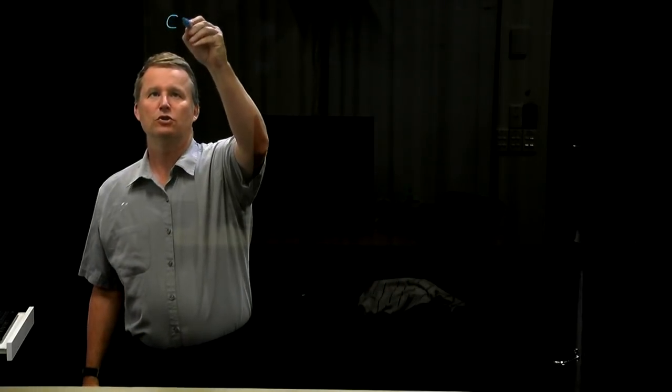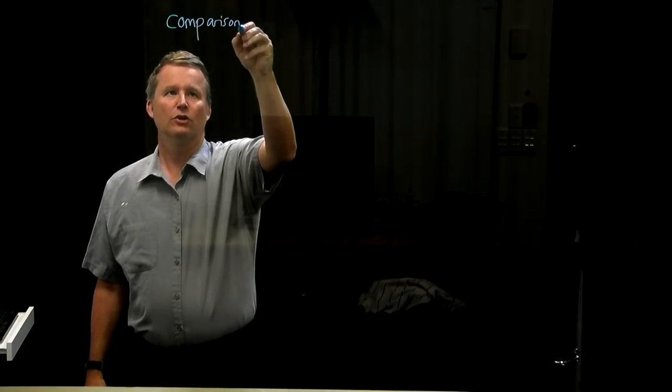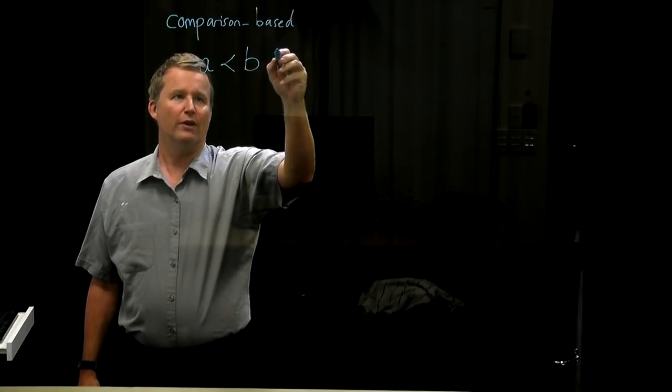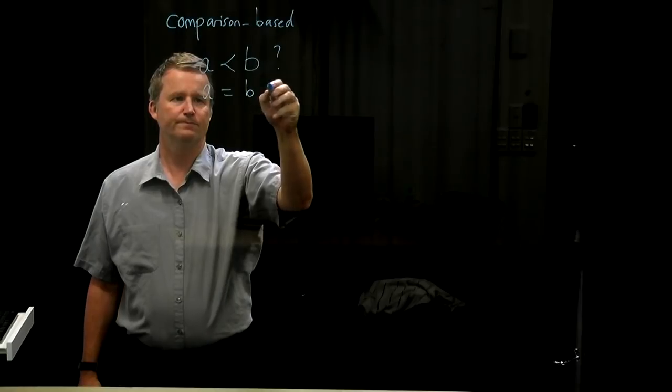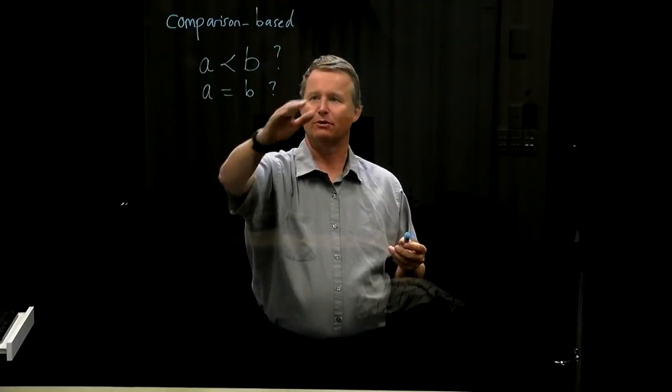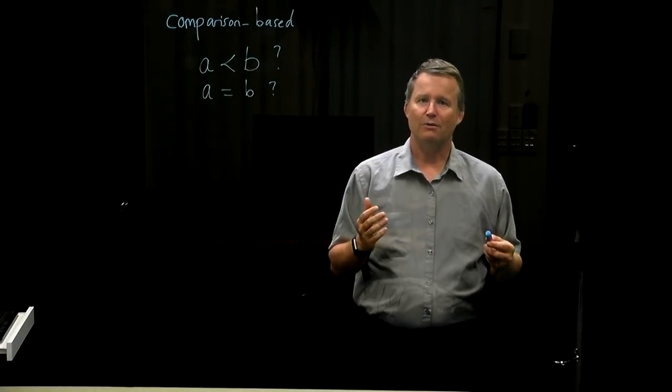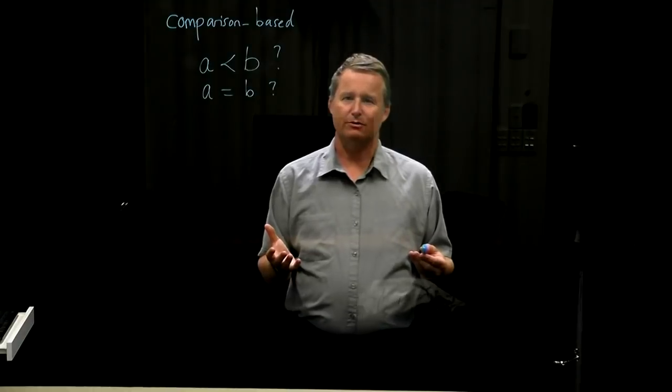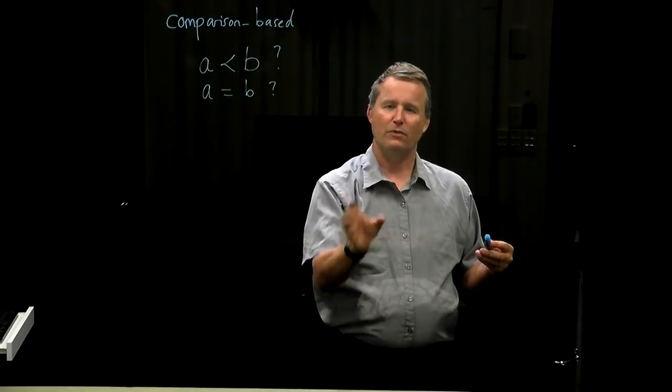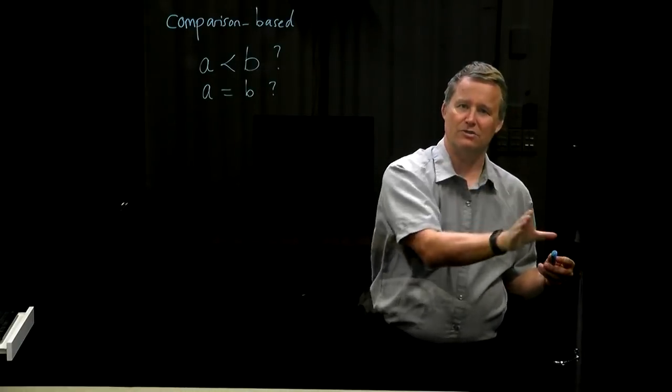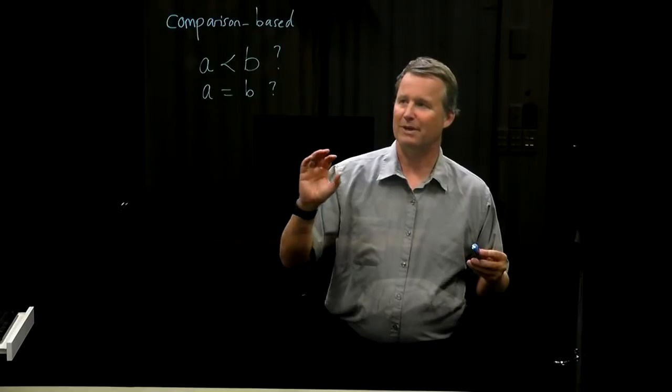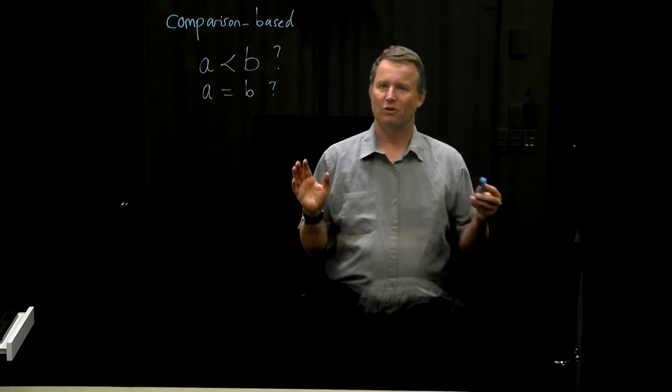The first one is called being comparison-based. We know that sorting is based on comparisons. If we have two elements, we can ask whether one is bigger than the other and whether they're equal. For a comparison-based sorting algorithm, those are the only questions that can be asked. We have some kind of black box which tells us the answer. We can't peek into the internal representation of the data. There are some sorting algorithms specialized for certain types of data, but that requires knowing the data type.